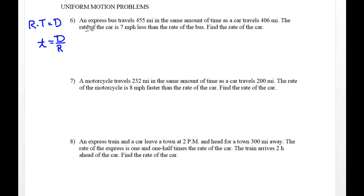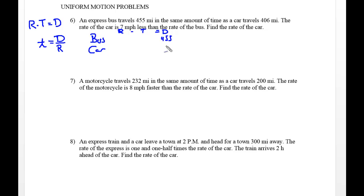Let's take a look at our first problem. An express bus travels 455 miles in the same amount of time that a car travels 406 miles. We're going to use rate times time equals distance. The 455 and the 406 are the distances of each vehicle. It says in the same amount of time, so we're going to use the cursive letter t to represent that.